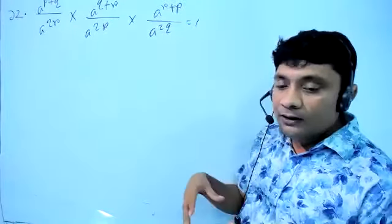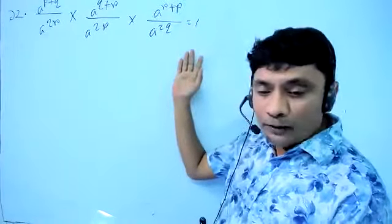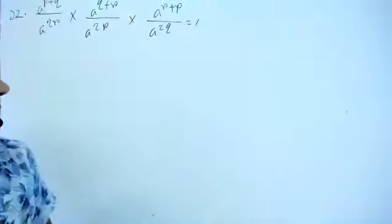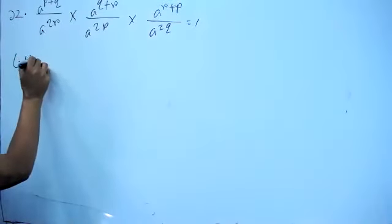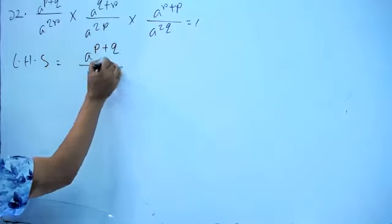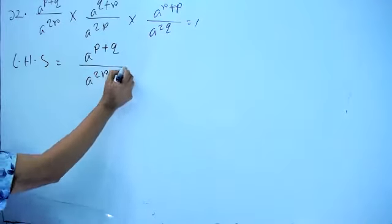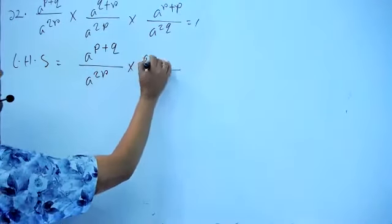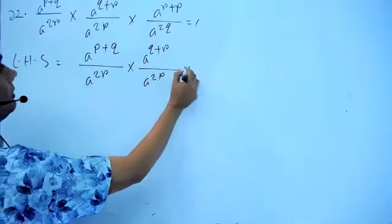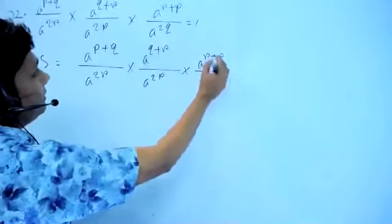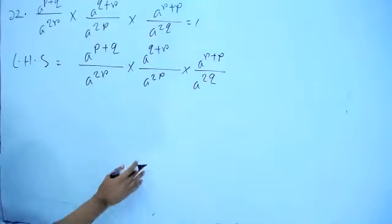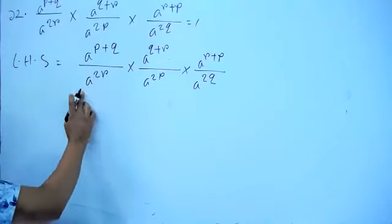I'm going to show you how to solve this. On the left hand side, we have: a^(p+q)/a^(2r) × a^(q+r)/a^(2p) × a^(r+p)/a^(2q).